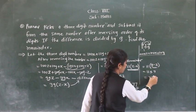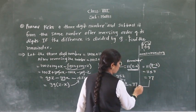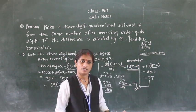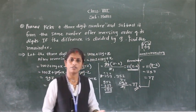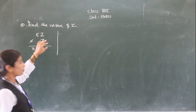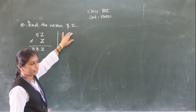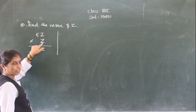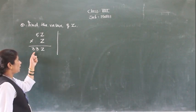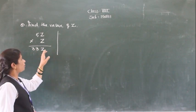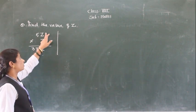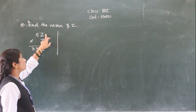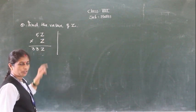So this result we have verified with an actual number. Now we will see the next example. The next example is: find the value of Z. 5Z multiplied by Z gives the product 33Z. So you have to find Z, and Z should be the same digit throughout.